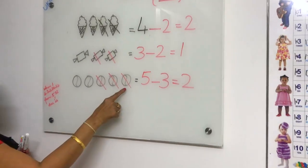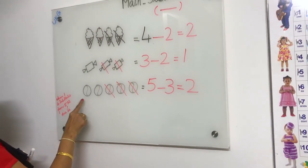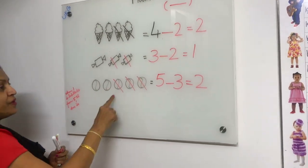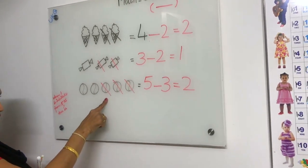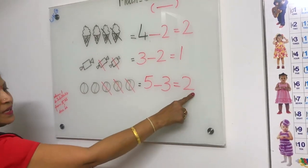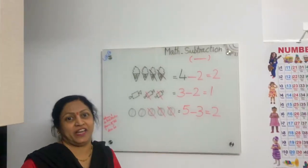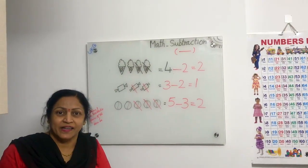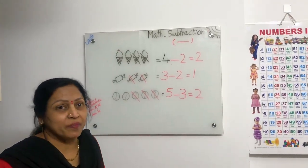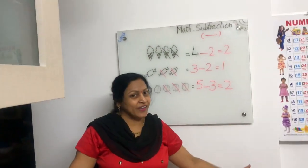Five balls were there and we subtracted three from five. The answer is two. This is subtraction. What is subtraction? Taking away. Removing from the group. Taking away.